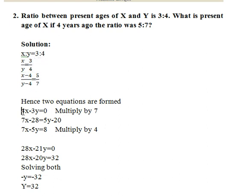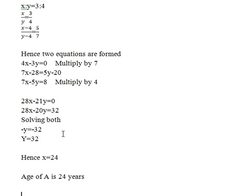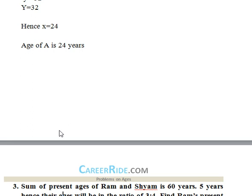Forming the equations: 4X minus 3Y equals 0 is equation 1, and 7X minus 5Y equals 8 is equation 2. We multiply equation 1 by 7 and equation 2 by 4 — the standard procedure for solving two simultaneous equations. Solving gives Y equals 32, and hence X equals 24. The present age of X is 24 years.